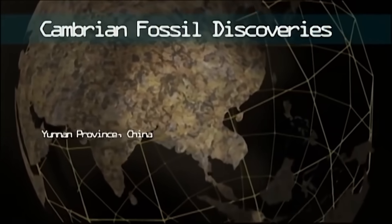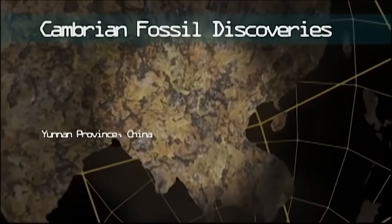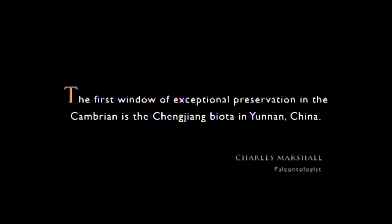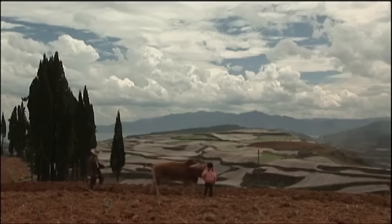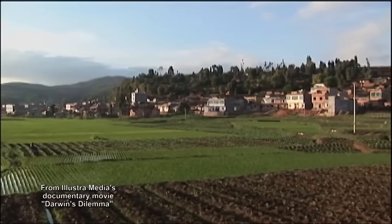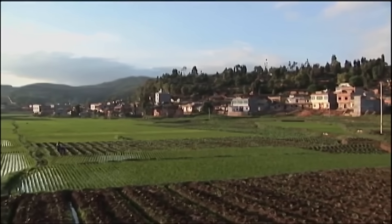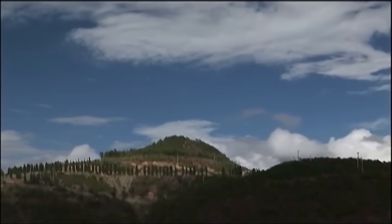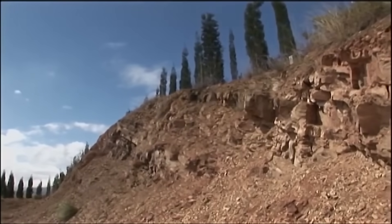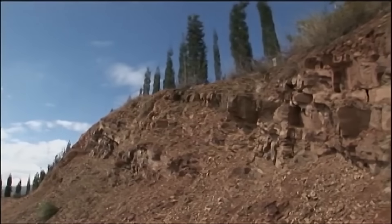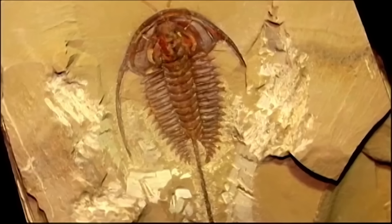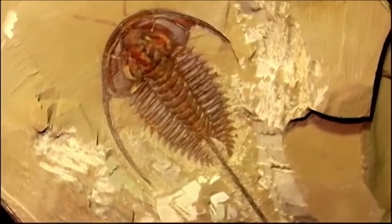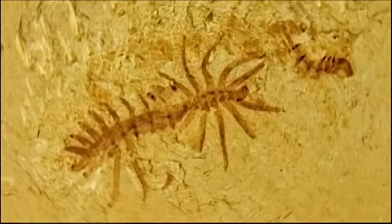Most recently, several discoveries in southern China have fascinated science and deepened the Cambrian mystery. In 1984, one of the most important finds in the history of paleontology was made outside a small town in China's Yunnan province. While surveying this mountain near Xinjiang, Ho Sien Guan unearthed Cambrian fossils older, more diverse, and better preserved than any ever discovered. The condition of the Chengjiang fossils was so remarkable, Ho said, it appeared as if the animals were alive on the wet surface of the mudstone.